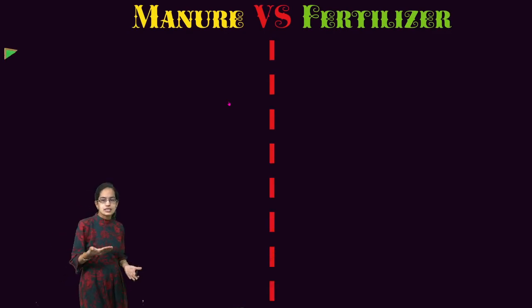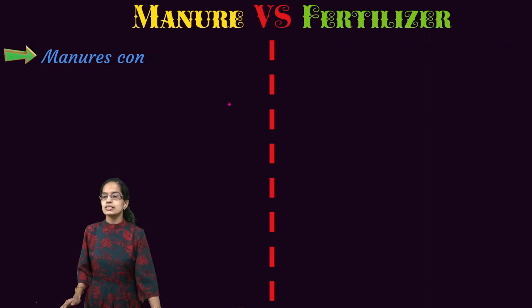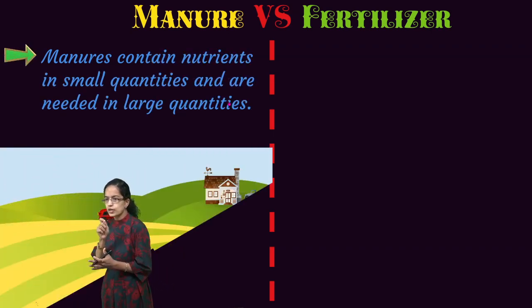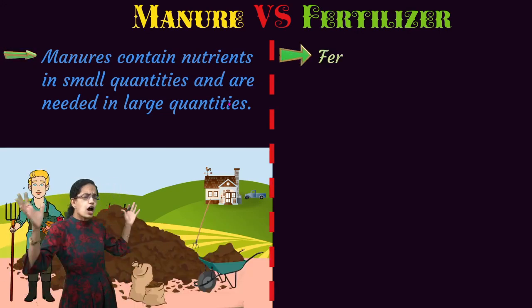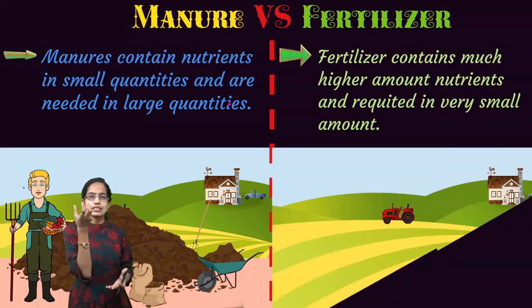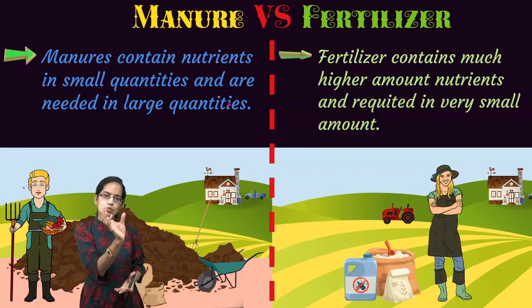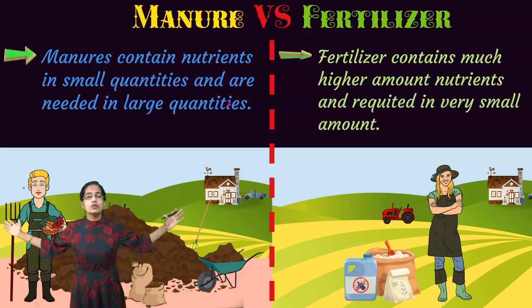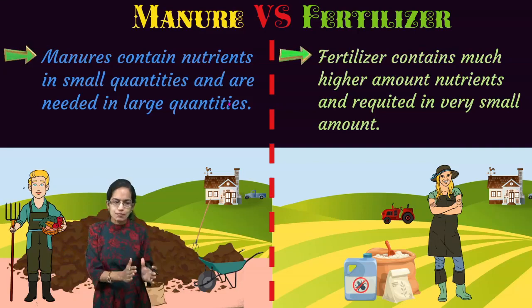Another major difference between manures and fertilizers is that manures contain nutrients in small quantities but they are needed in large quantities — we have to put in a large amount of manure. However, with fertilizer, say potassium fertilizer, it would be required in a small amount, whereas we would require a huge amount of manure to be used for the same purpose.